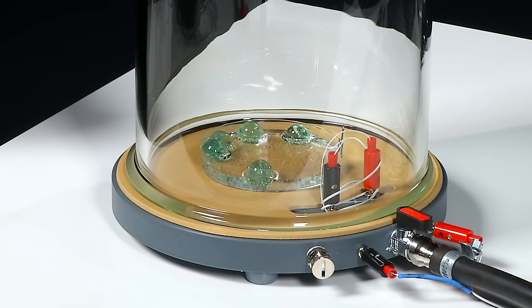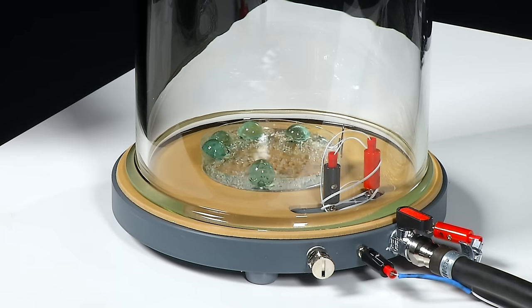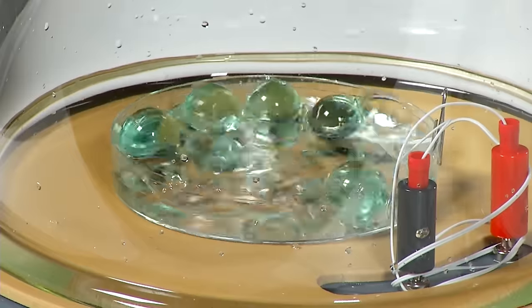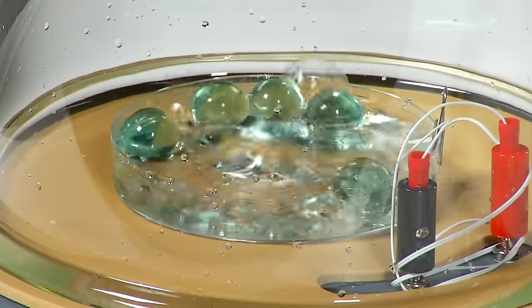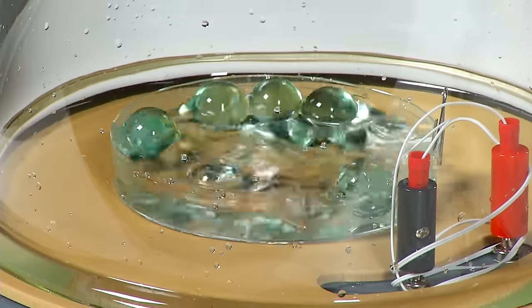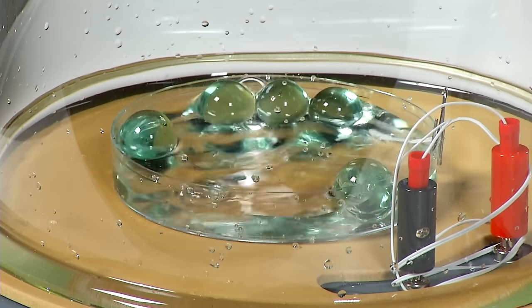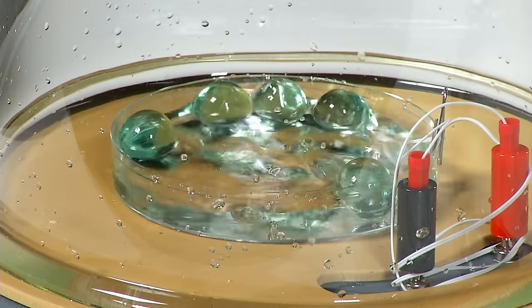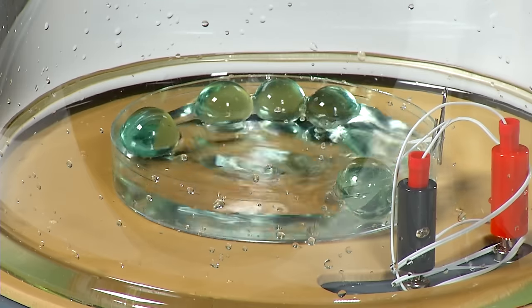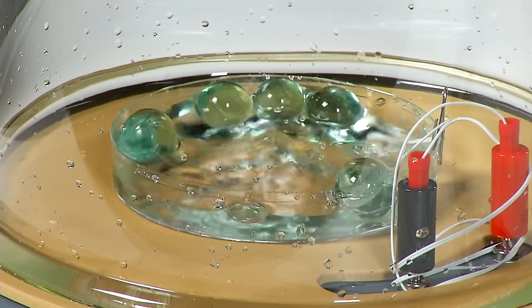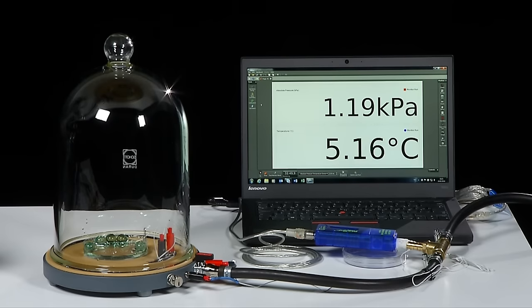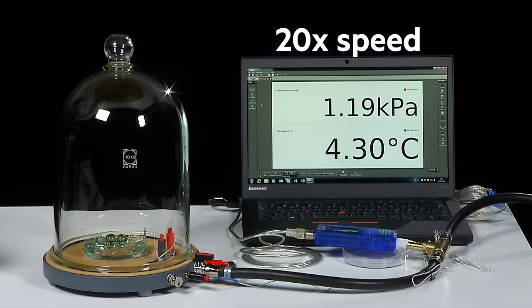During evacuation the liquid water starts to boil as the pressure drops to the saturation pressure at the given temperature. The glass beads reduce the splashing of water during boiling while the pressure decreases. They will also provide nucleation sites for the other two phases. While the pressure drops quite quickly it takes longer for the temperature to approach values around 0.01 degrees Celsius.